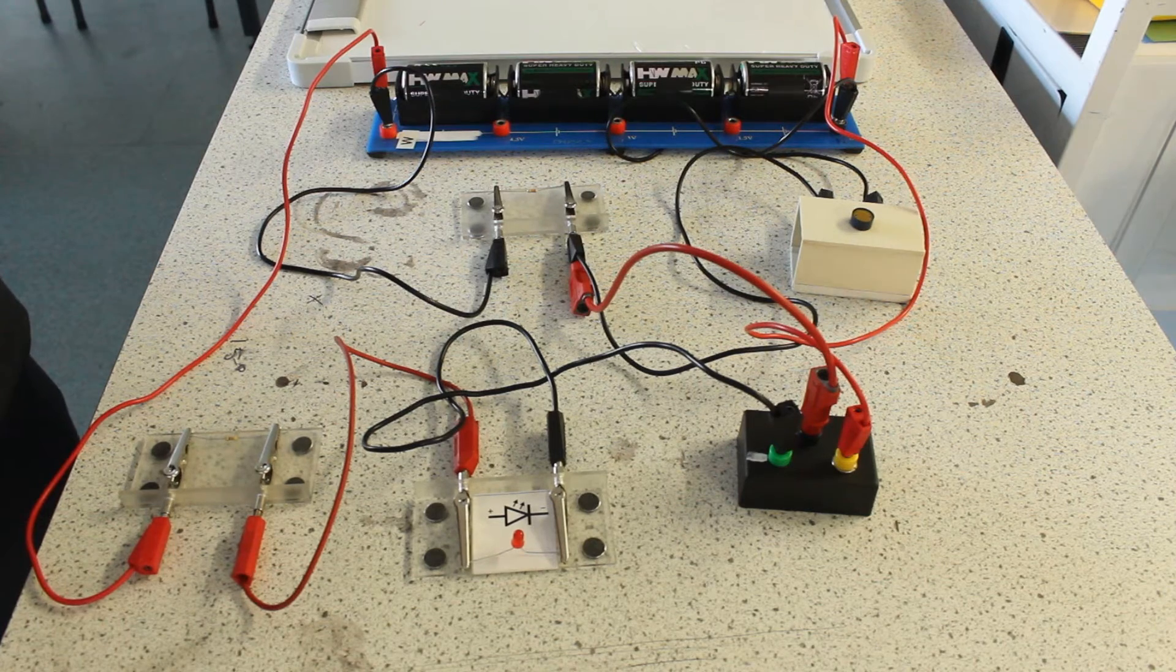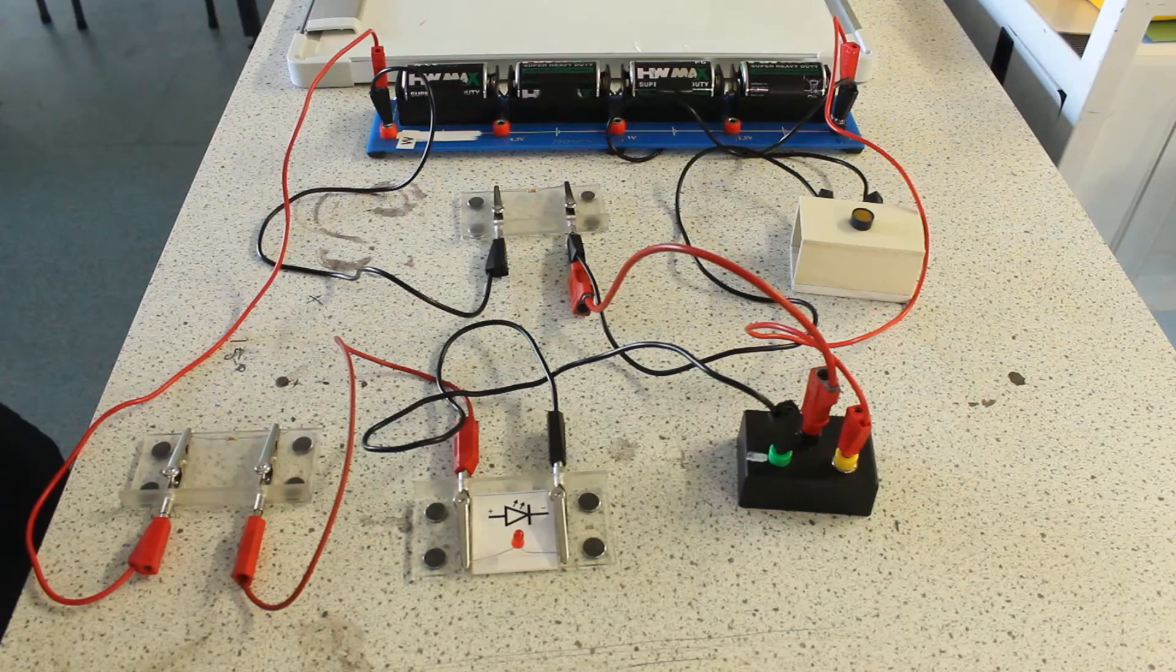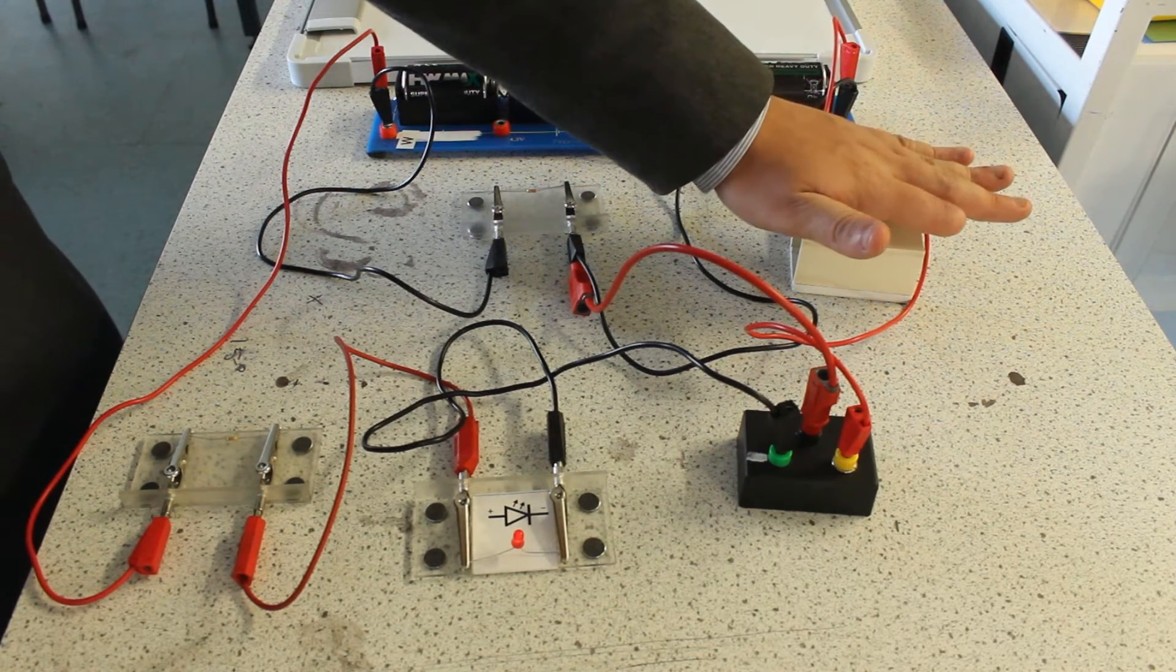So if you look at this circuitry here, I've got an LED which currently isn't emitting any light, but when I place the LDR in darkness, i.e. by covering it, the LED lights up.